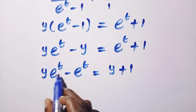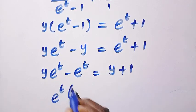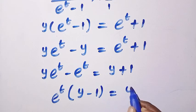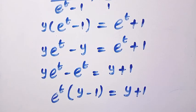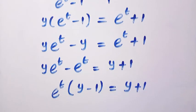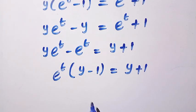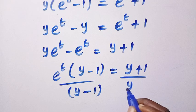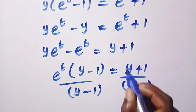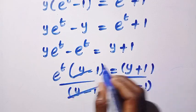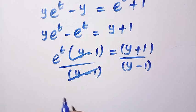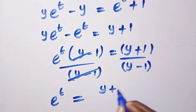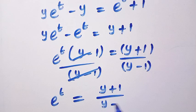Let's factor out e^t. By factoring out e^t, we have e^t(y - 1) = y + 1. Divide both sides by (y - 1). So (y - 1) cancels (y - 1), and we have e^t = (y + 1)/(y - 1).